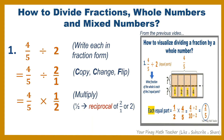Since 4 and 2 can be reduced by 2, we divide them by 2: 4 divided by 2 is 2, and 2 divided by 2 is 1. Then 2 times 1 is 2, and 5 times 1 is 5. So 4 fifths divided by 2 is 2 fifths.